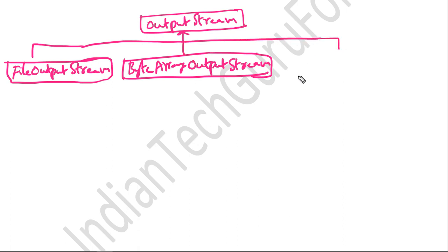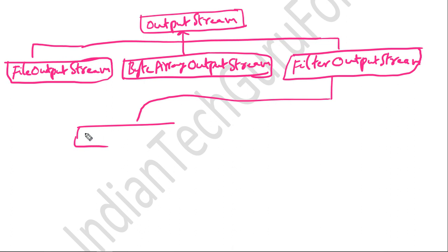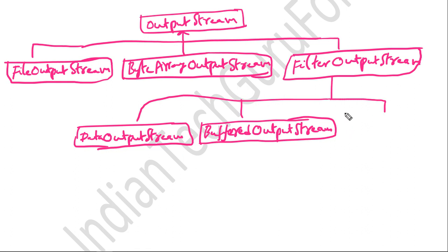The third class derived from the OutputStream class is the FilterOutputStream class. Three more classes are derived from the FilterOutputStream class: DataOutputStream, BufferedOutputStream, and PushbackOutputStream.